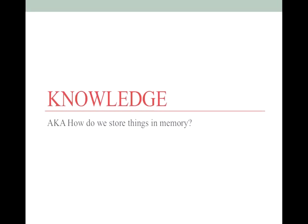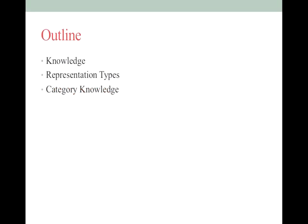More on the specific types of memory will come in module 8. To start, I'm going to talk about knowledge overall — what is knowledge, and the representation types, so all the systems. The next section, 7.2, is category knowledge — so how are things structured in memory?